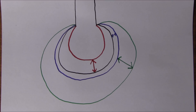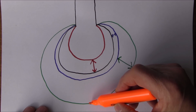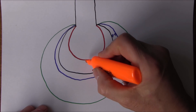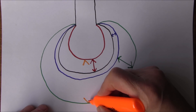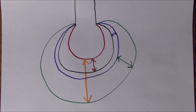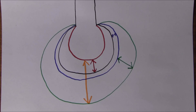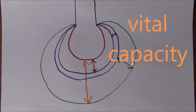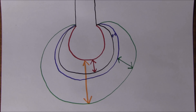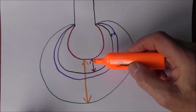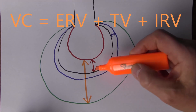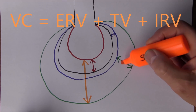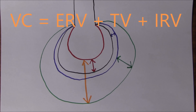Another situation: we go from breathing out all we possibly can, all the way to breathing in all we possibly can — from maximum exhalation to absolute maximum inhalation. That gives us the vital capacity, drawn in orange. In men that's about 4,800 mils and in women about 3,100 mils. We can calculate the vital capacity because it equals the expiratory reserve volume plus the tidal volume plus the inspiratory reserve volume.